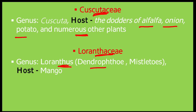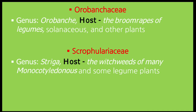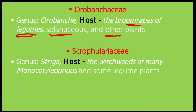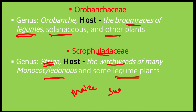Loranthus is also called Dendrophtho or Mistletoe, and its host is mango. Orobanche belongs to family Orobanchaceae and is also known as Broomrape. Its hosts include legumes, solanaceous crops and other plants. Striga belongs to family Scrophulariaceae and is also known as witch weed. Its hosts include many monocots and legume plants like maize and sugarcane.